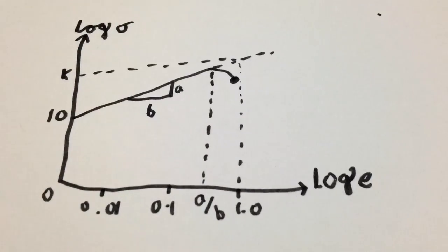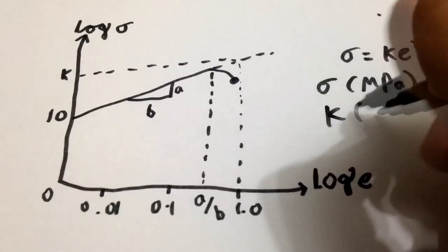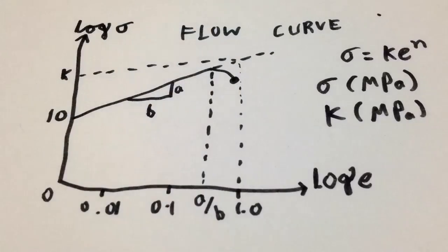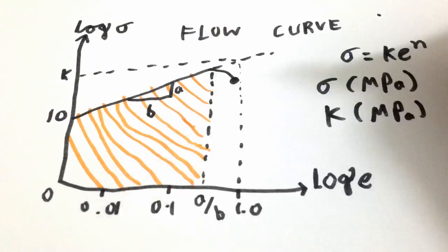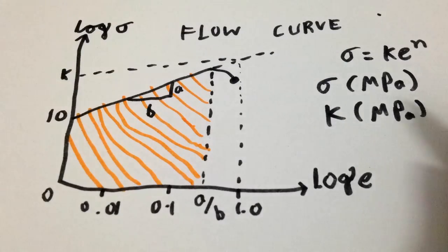Where sigma is true stress in MPa, K is strength coefficient in MPa, n equal to strain hardening exponent and ε denotes true strain. The later curve from the beginning point marks the beginning of the plastic region and is hence called as a flow curve.